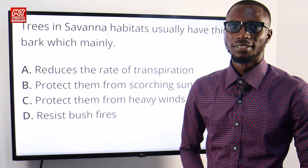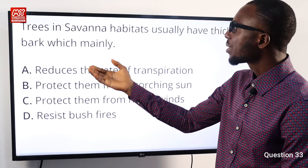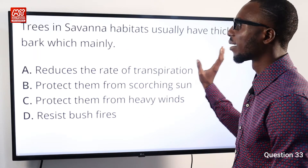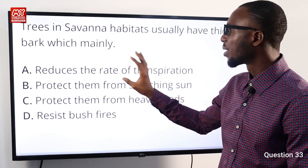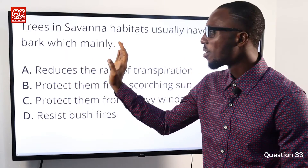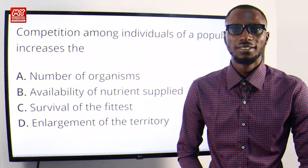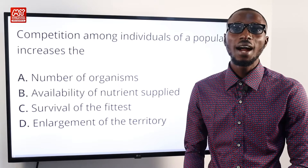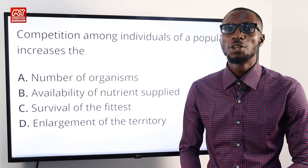Question 33: Trees in savannah habitat usually have a thick bark, which mainly reduces the rate of transpiration or water loss. So option A is very correct.